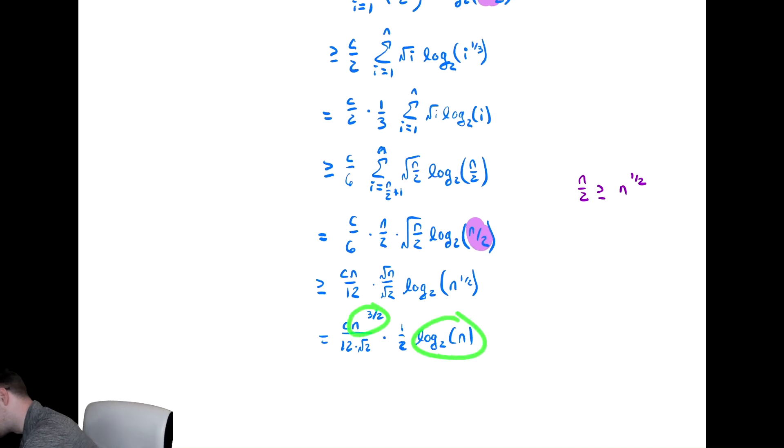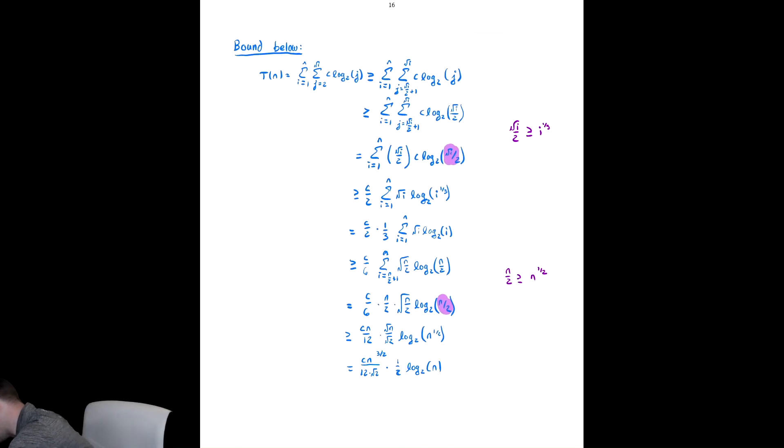So we have c over some horrible mess times one half times n to the three halves log base two of n. So all of this junk I just did, yikes, is going to be that we are in omega of n to the three halves log n.